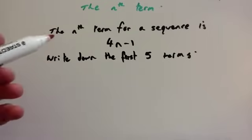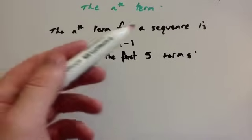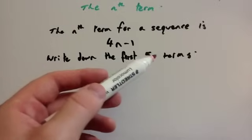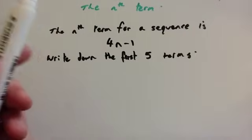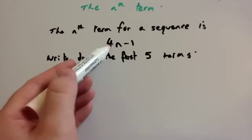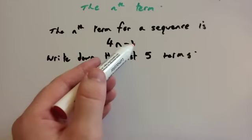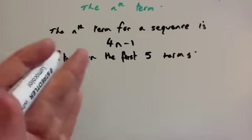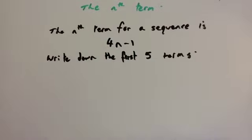Now we're going to look at another example. This question says the nth term of a sequence is 4n take away 1. Write down the first five terms. There are two ways to do it. You could say this is the 4 times tables take away 1, so instead of 4, 8, 12, 16, 20, you take 1 away from each: 3, 7, 11, 15, 19, and so on.